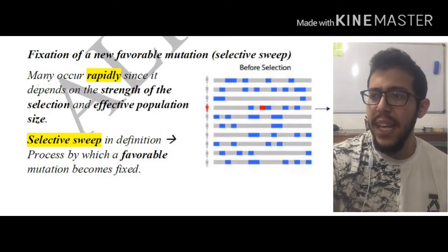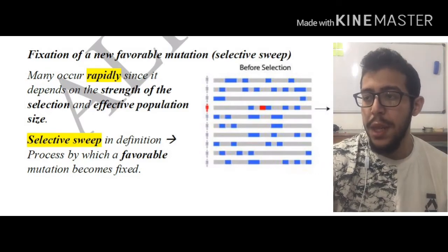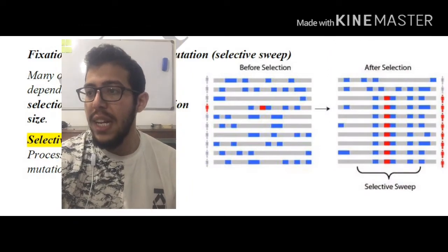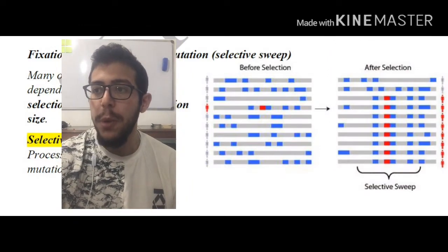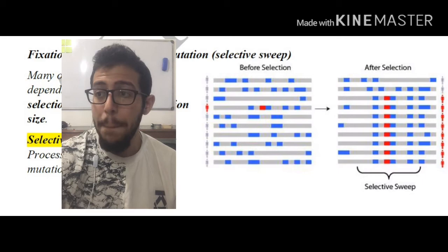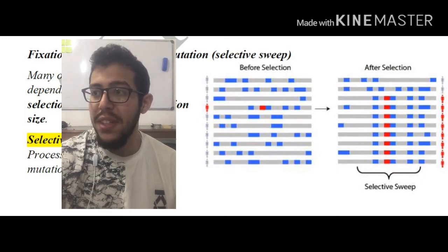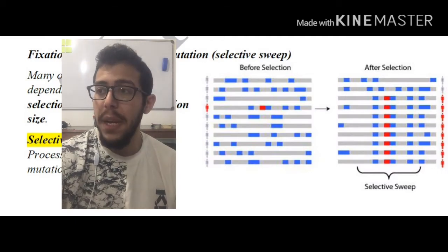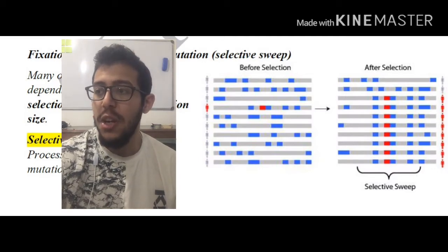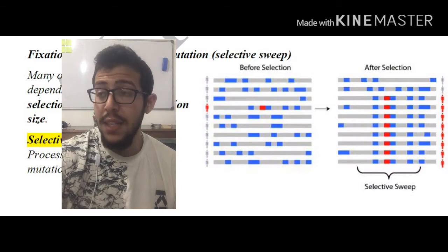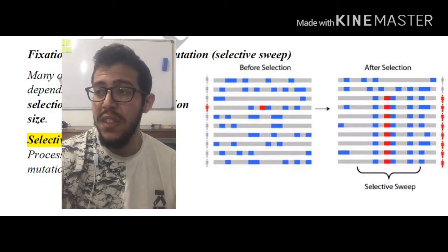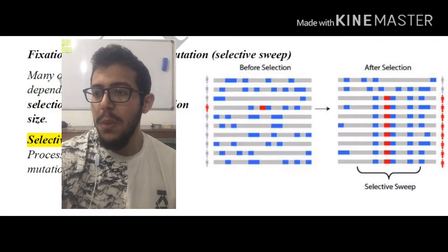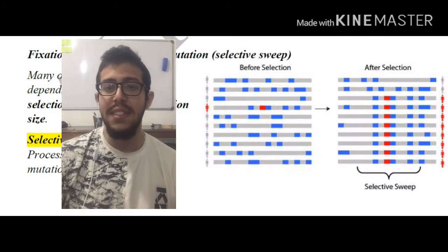This is indicated in the image on screen. Before selection, we have one particular allele that is important, or a mutation that caused an allele to be rather important. After selection, most of the organisms in a population are going to have this mutation or allele. We're going to continue talking about this in the next slide.